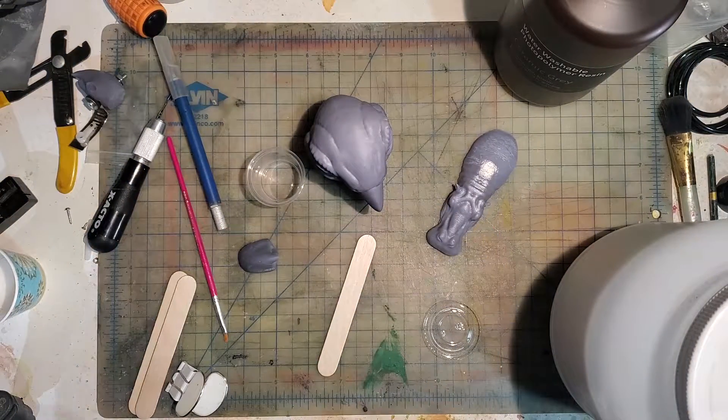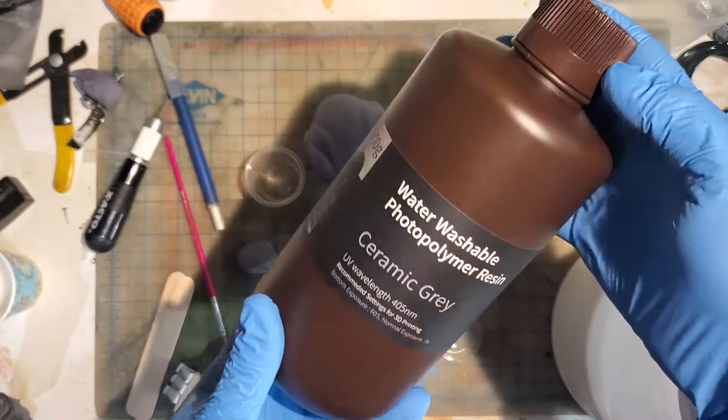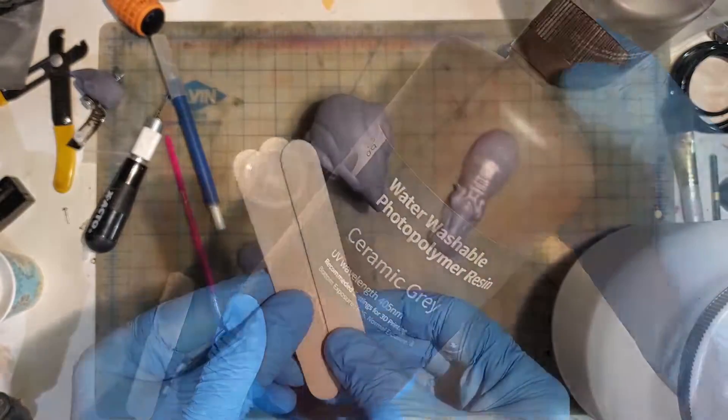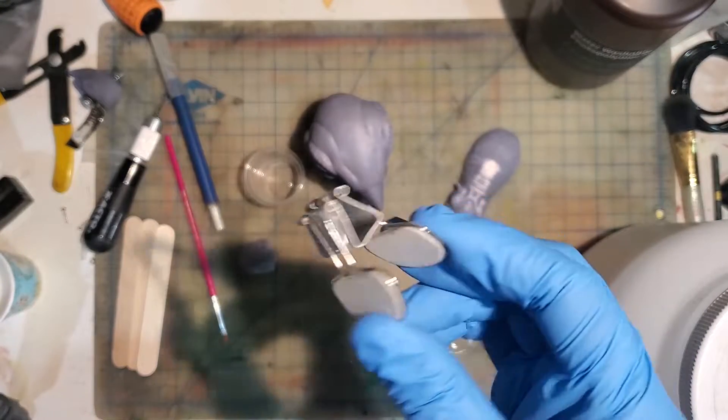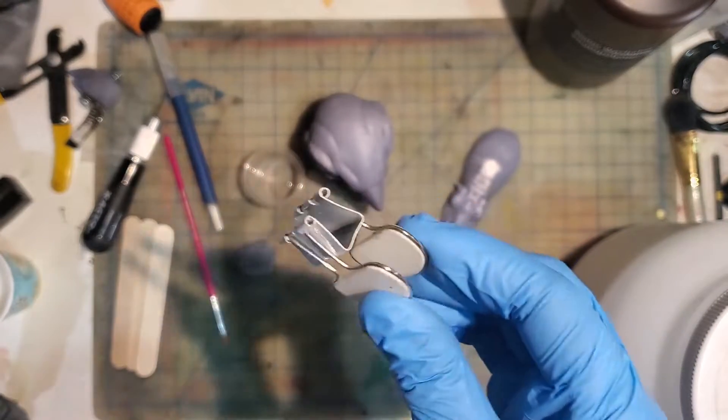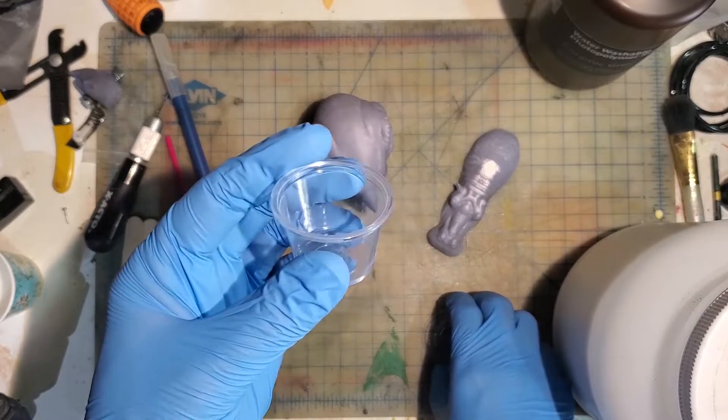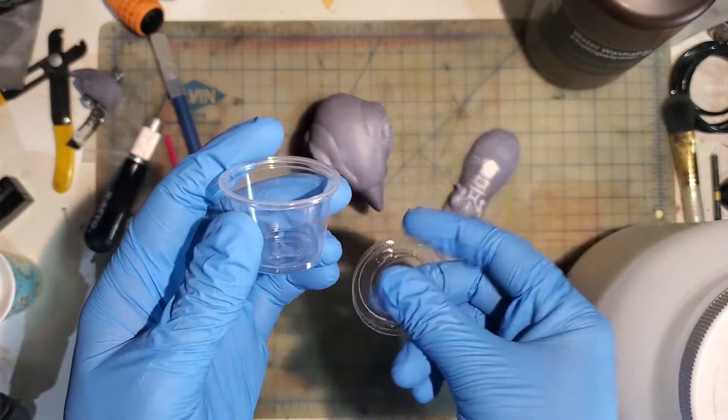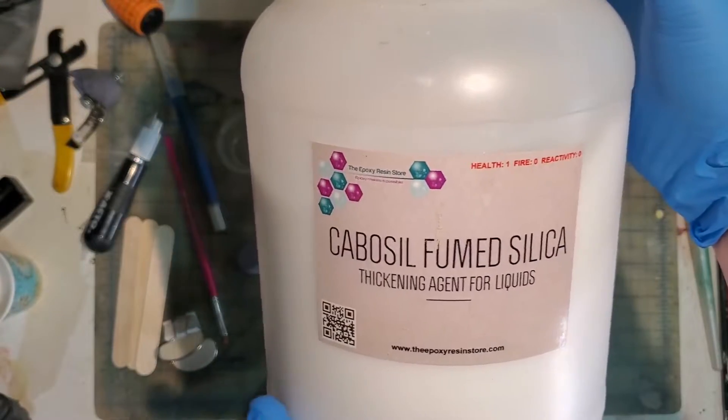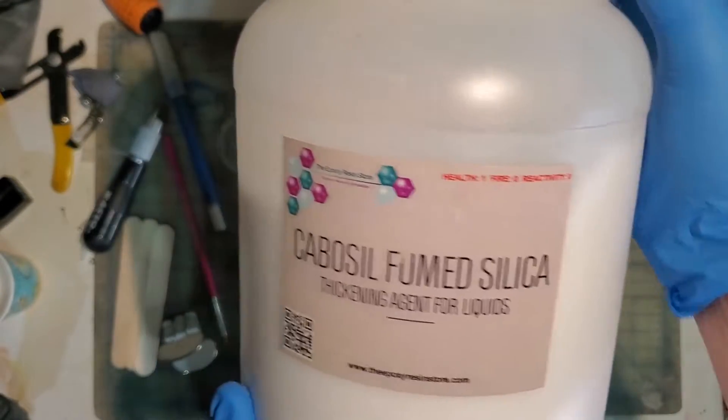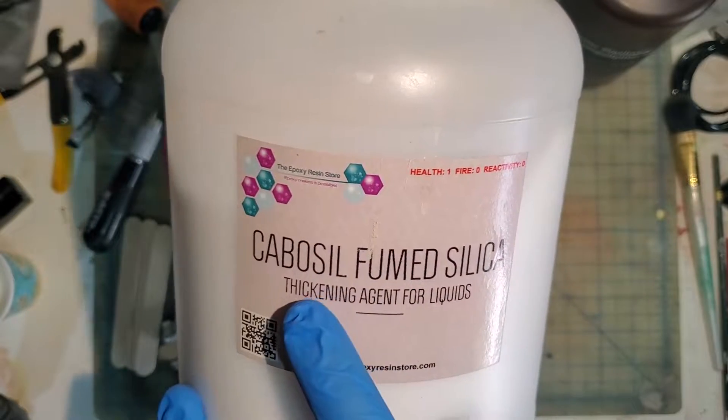Here are the materials you're going to need for this project. The same resin used to print your models. Some popsicle sticks. A paper clamp that's been thoroughly tested to make sure it's springy. A small container with a lid, in my case I'm using a dram cup. And the secret ingredient, cabosil fumed silica. I picked this up from Amazon, and as the description suggests, I'll be using this to thicken my resin paste.